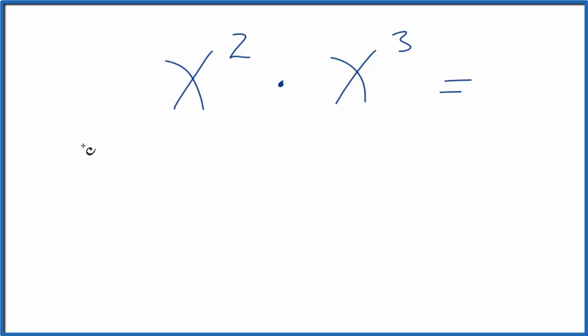First off, let's just look at x squared. We could rewrite that as x times x. That will give us x squared. Then we're going to multiply x cubed, which is x times x times x.